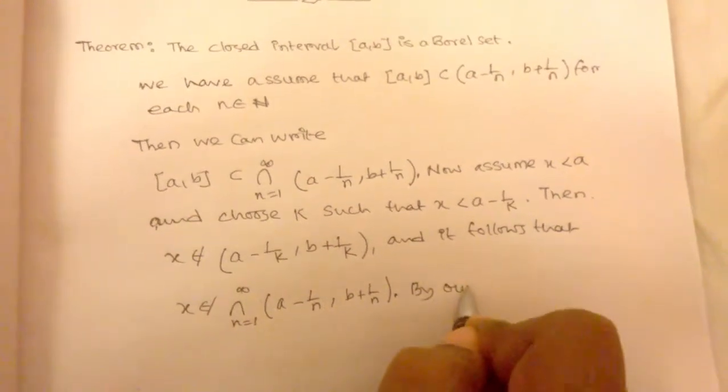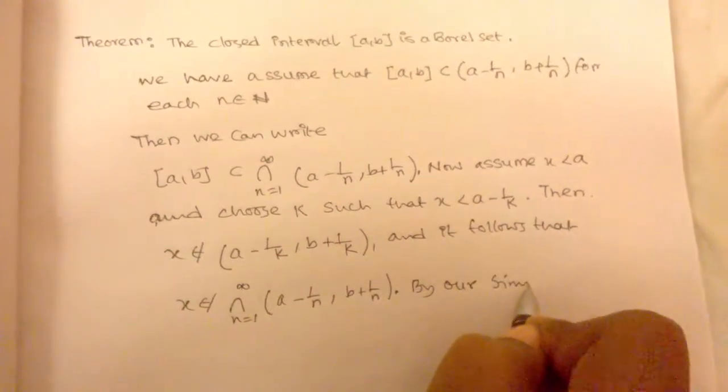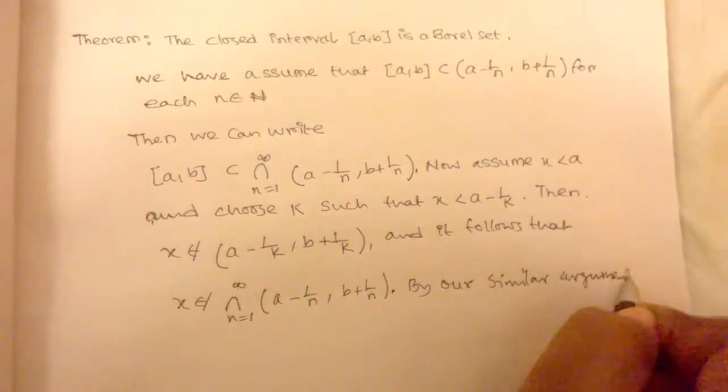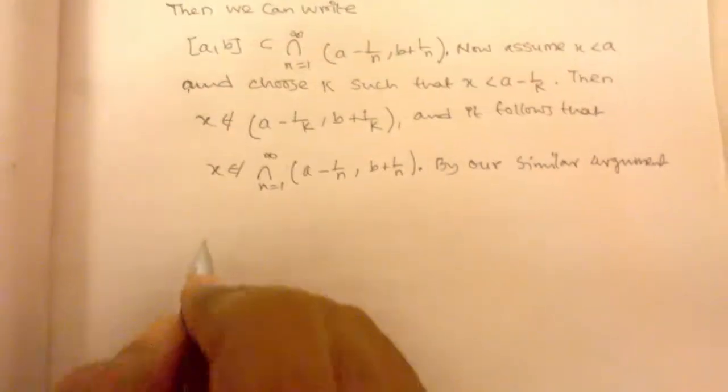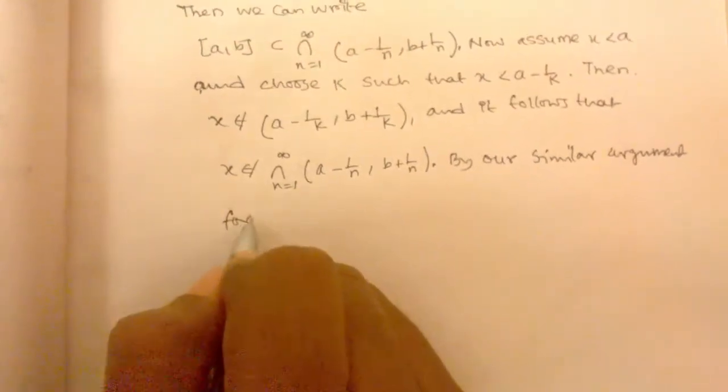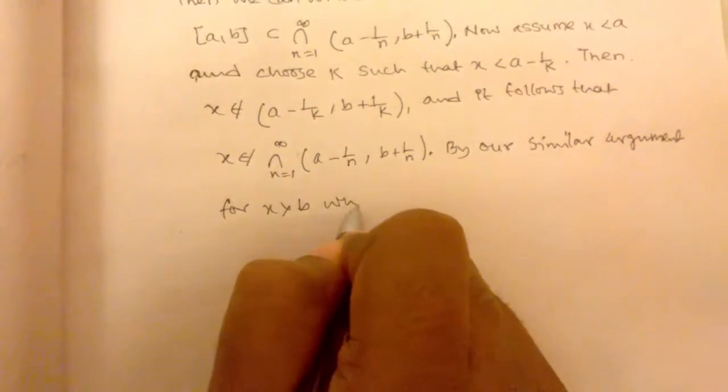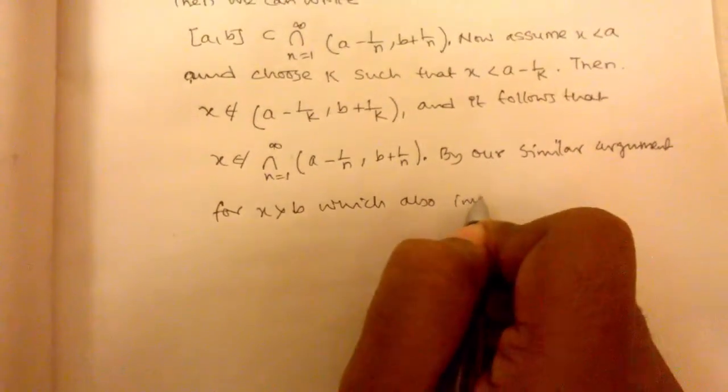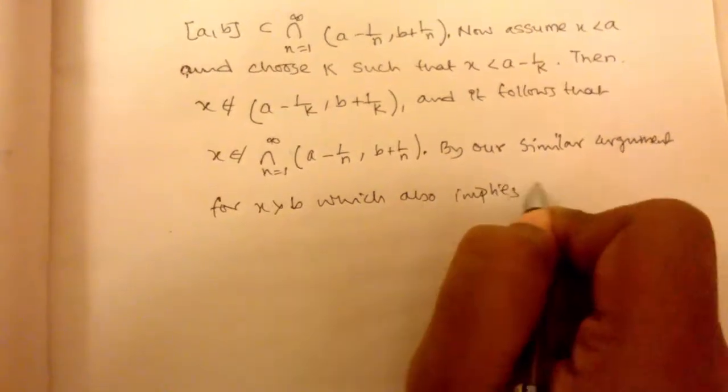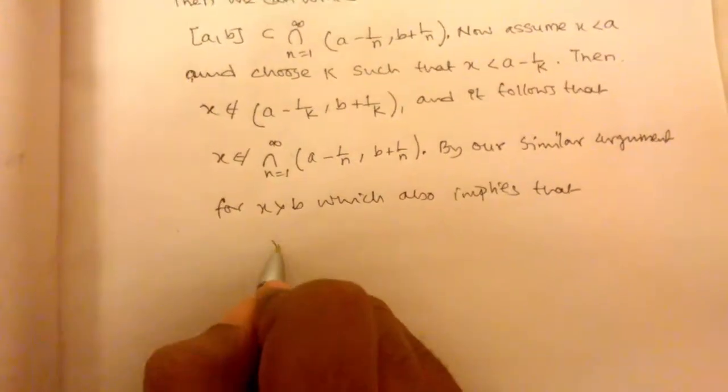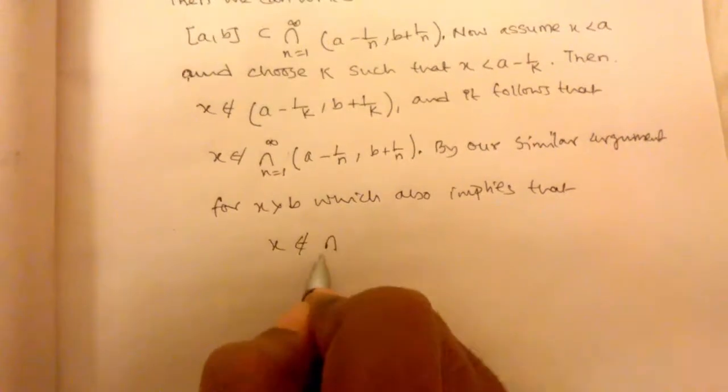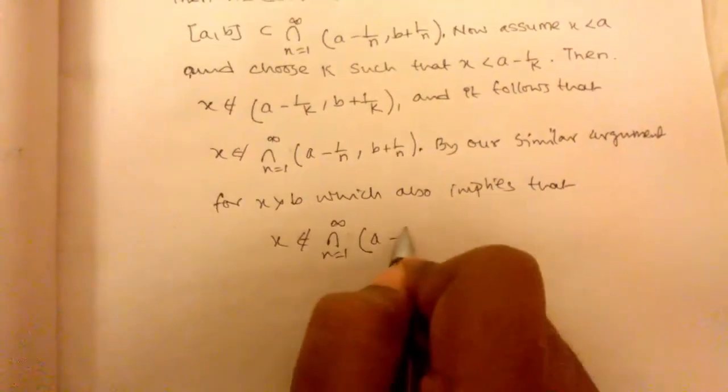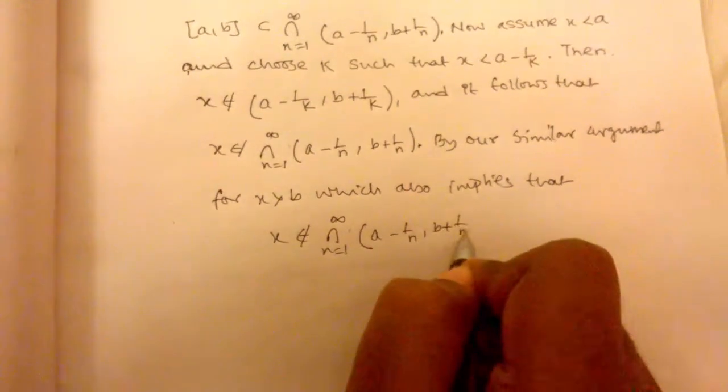By a similar argument, for x greater than b this also implies that x does not belong to the intersection from n equals 1 to infinity of (a - 1/n, b + 1/n).